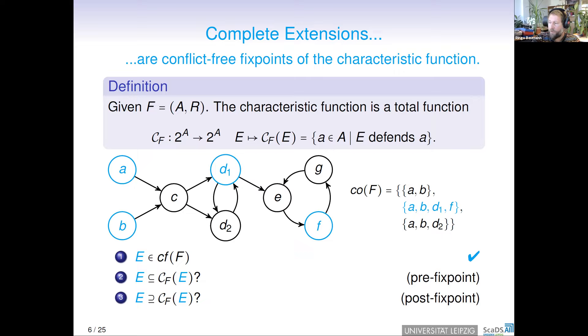In the next step, we have to check that it is a post-fixpoint. Here it suffices to check that for any argument which is not in E, it is also not defended by E. For instance, C is not in E. C is attacked by A, but A is not counter-attacked by an argument colored in cyan, so C is not defended. D2 is not in E. D2 is attacked by C, but this is counter-attacked by A, but D2 is also attacked by D1, and this is not counter-attacked by an argument colored in cyan. In this way, we can check that it is a conflict-free fixed point.